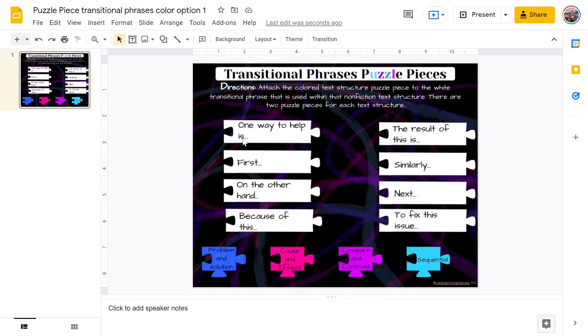Starting at the top left, we have the transitional phrase one way to help is, and students will think to themselves which text structure would I read the phrase one way to help is. If I was a writer, I would use this transitional phrase when I'm describing a solution to a problem. So students would come down and they would take a problem and solution puzzle piece, and they would drag it up to the white puzzle piece. You'll have some students that get close like this, and you'll have some students that really want to be more accurate. A little tip, if you press the shift button when you're close to connecting those puzzle pieces and the arrow keys, you can be a little more accurate with your placement.